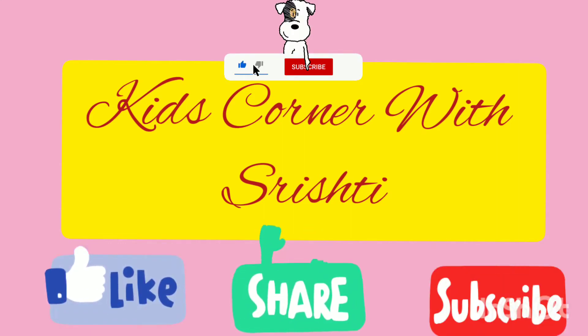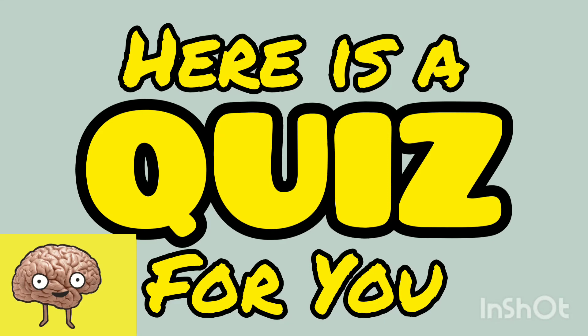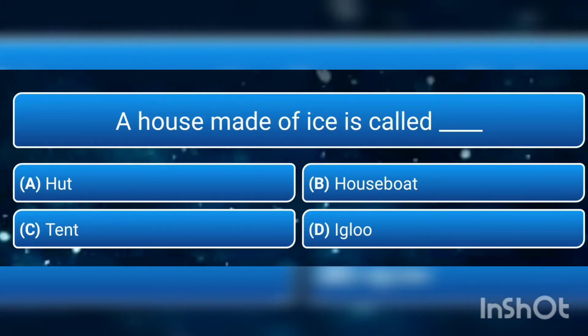Hi friends, welcome to Kids Corner with Rishty! Here is a short quiz for you, comprised of 10 questions. The first question is: a house made of ice is called — a) hut, b) houseboat, c) tent, or d) igloo?